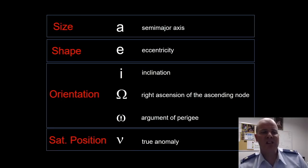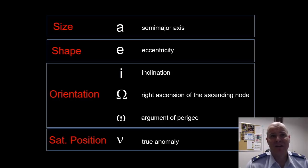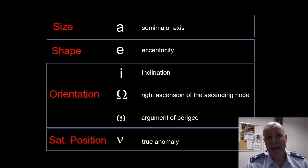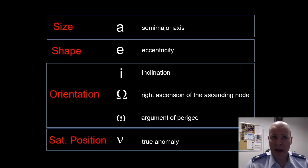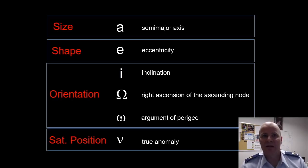In summation, we have six classical orbital elements which help us visualize our orbit. Our size is A, given as the semi-major axis. Our shape is defined as E, or our eccentricity. Our orientation is defined by three angles: our inclination, or I; our right ascension of the ascending node, or capital omega; our argument of perigee, or lowercase omega. And finally, our satellite position within that orbit as the true anomaly, nu. Thanks, see you next time.